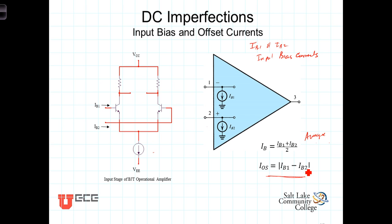We should point out that this input offset current phenomenon is something we deal with more with bipolar junction transistors or BJTs than with field effect transistors.